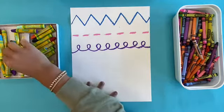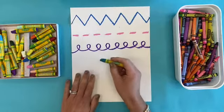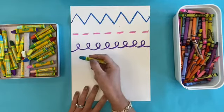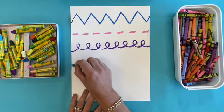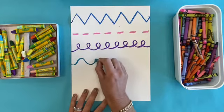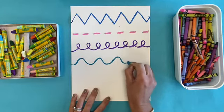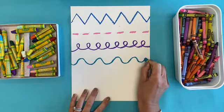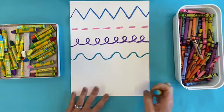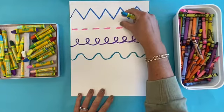Hmm, what else should we make? How about a wavy line? Grab a new color—wavy line, just like the waves of the ocean. Good job! Now we're leaving some space in between our lines.